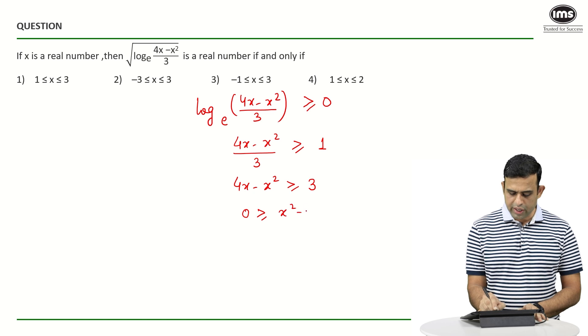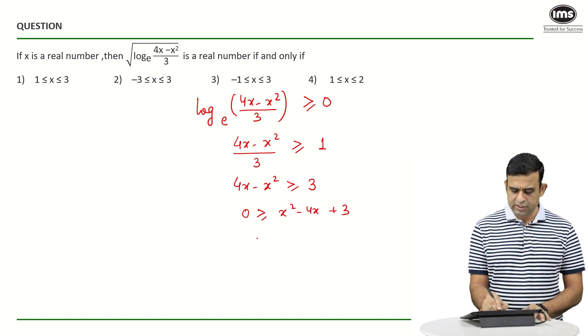So we can say 0 ≥ x² - 4x + 3, which I can rewrite as x² - 4x + 3 ≤ 0.